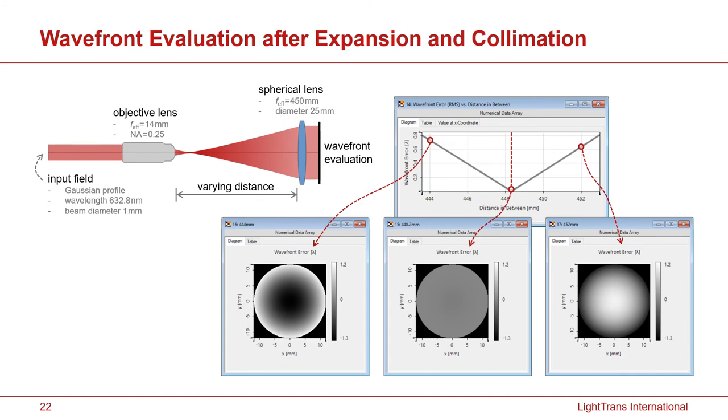With our software, we'd like to first analyze the collimation system. By varying the distance between the objective lens and the spherical lens, we can see at which position the output wavefront looks best. In this case, we can see that at about 448.2 millimeters, we have almost a plane wavefront.